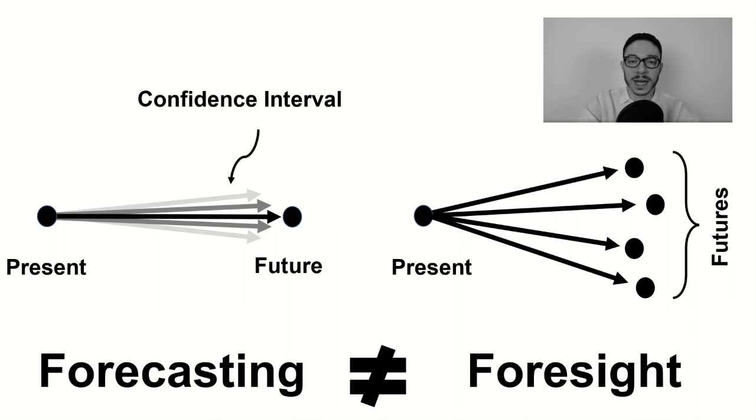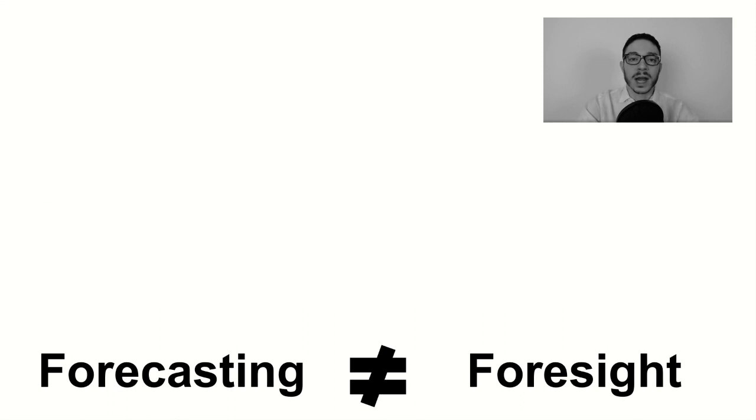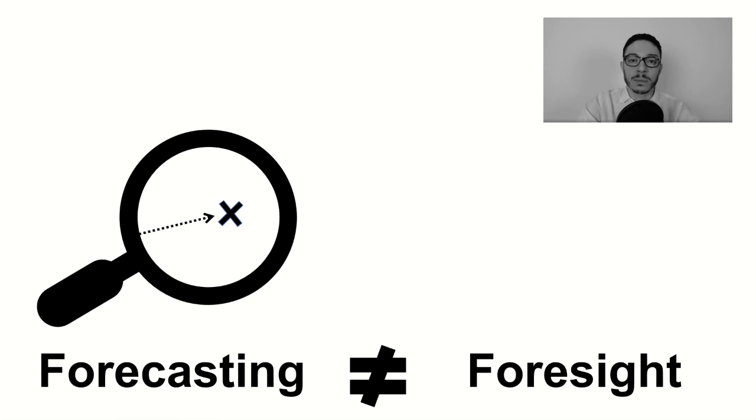Third, when we look at forecasts, we are actually looking at single point estimates - single variables detached from other variables in the future. For example, we're looking at unemployment in the future or GDP growth of a specific country in the future, regardless of the behavior of other variables in the future. We're only looking at the behavior of other variables in the past.